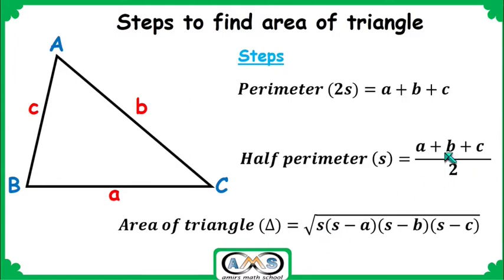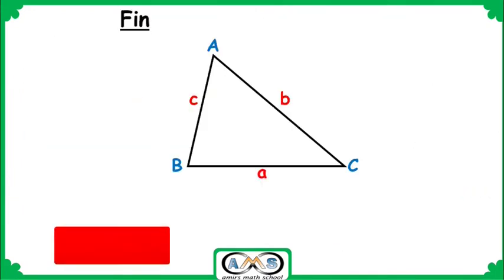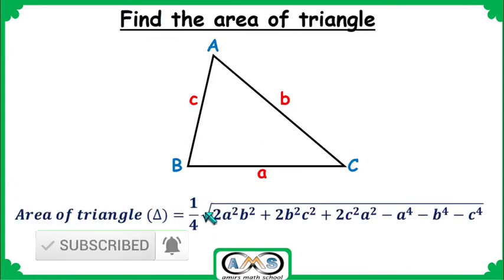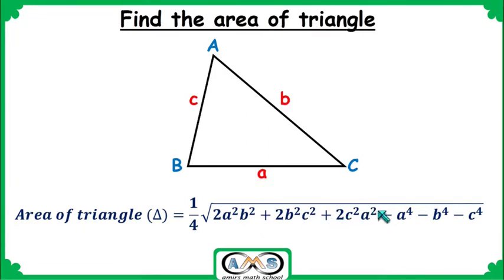If we substitute s = (a + b + c) / 2 into Heron's formula, we get an alternative form: Area = ¼ · √(2a²b² + 2b²c² + 2c²a² − a⁴ − b⁴ − c⁴). This formula is applicable for any kind of triangle and gives the area directly from the three side lengths.